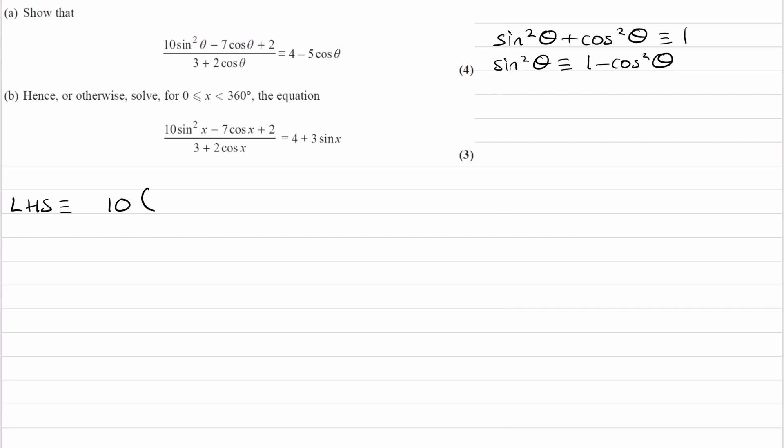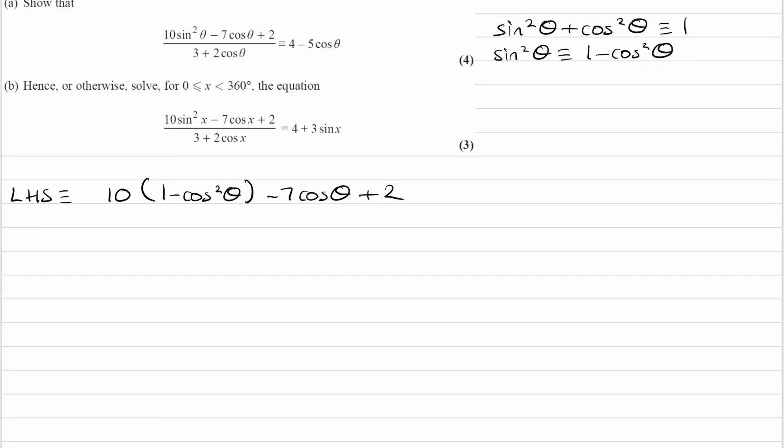So our numerator then becomes 10 times 1 minus cos squared theta, minus 7 cos theta plus 2, all over the same denominator that we had. So 3 plus 2 cos theta.